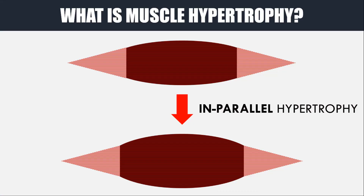First, we need to establish what muscle hypertrophy means. Simply put, muscle hypertrophy means growth of muscle. What is happening at a structural level is that the muscle fibres actually increase in size.